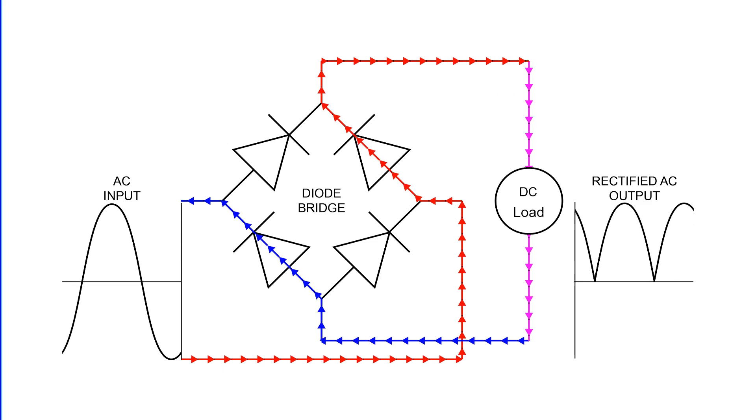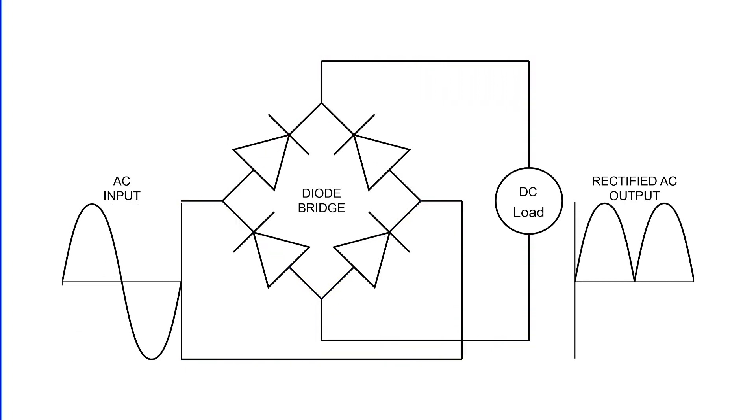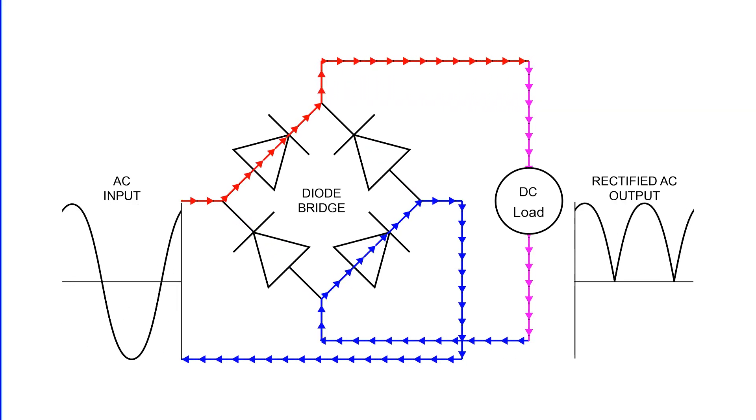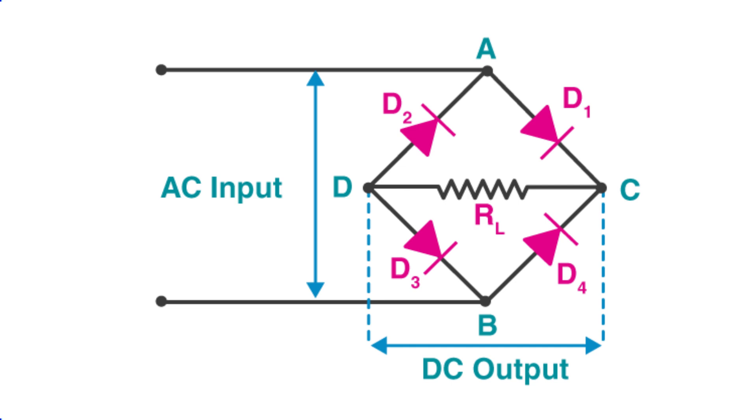These diodes are meticulously arranged in a bridge circuit configuration for optimal performance. Typically, a bridge rectifier is composed of four diodes, named D1, D2, D3, and D4.